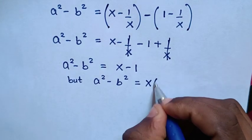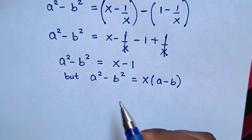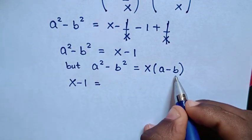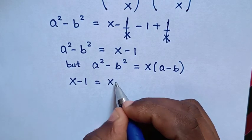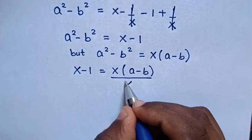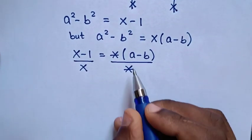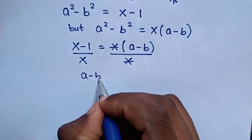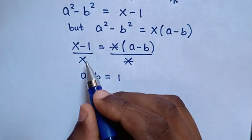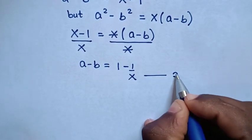Recalling that a squared minus b squared equals x times (a minus b), we compare the two expressions: x times (a minus b) equals x minus 1. Dividing both sides by x gives a minus b equals 1 minus 1 over x. We call this equation 2.